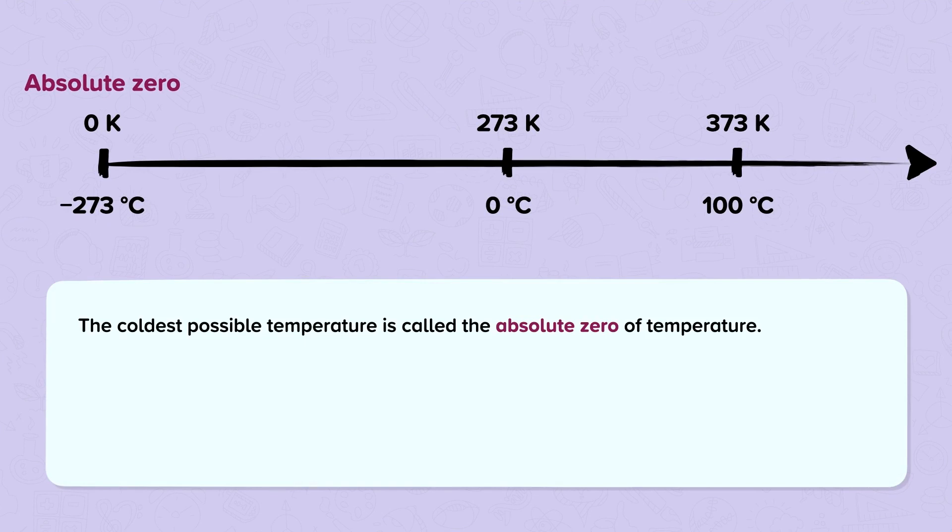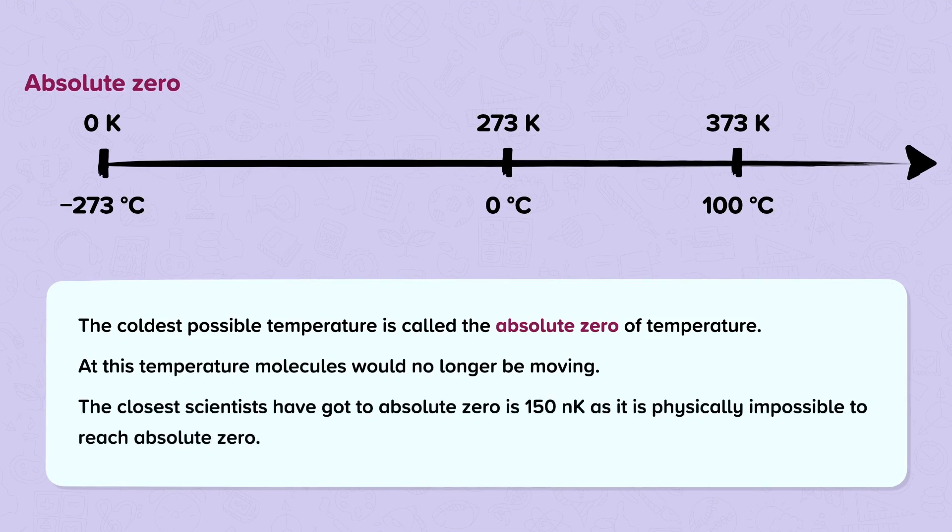The coldest possible temperature is called the absolute zero of temperature. At this temperature, molecules would no longer be moving. The closest scientists have got to absolute zero is 150 nK, as it is physically impossible to reach absolute zero.